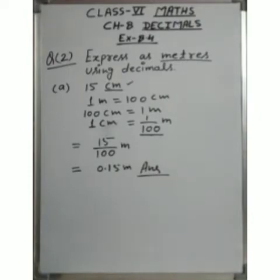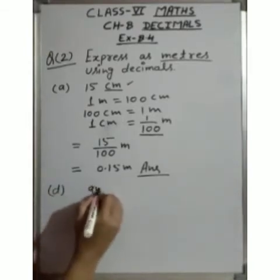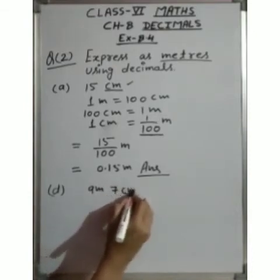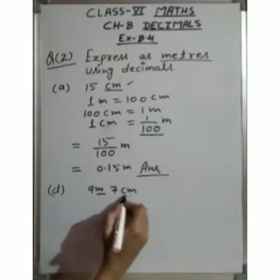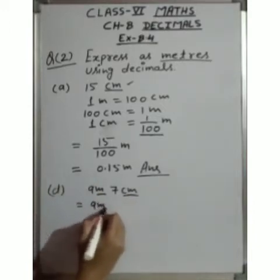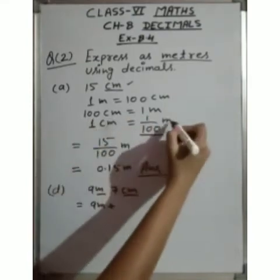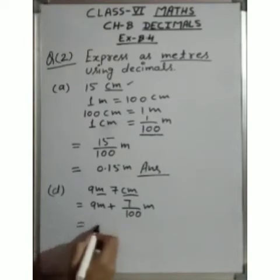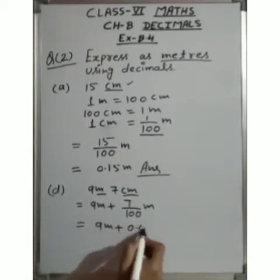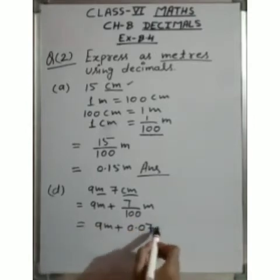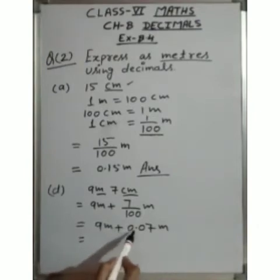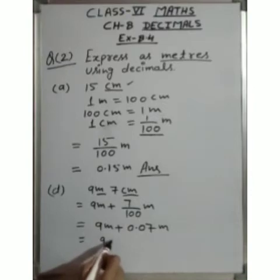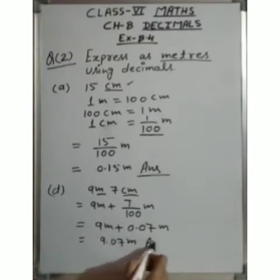B and C parts are the same. Now we will do D part: 9 meters 7 centimeters. 9 meters is already in meters, so we write it as it is. To convert 7 centimeters to meters, we divide by 100: 7 upon 100 = 0.07. So 9 meters + 0.07 = 9.07 meters. This is our answer.